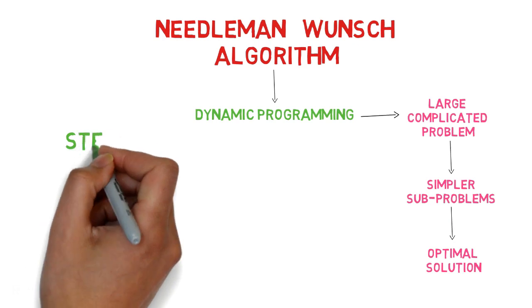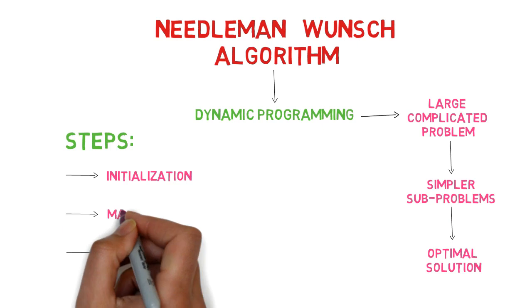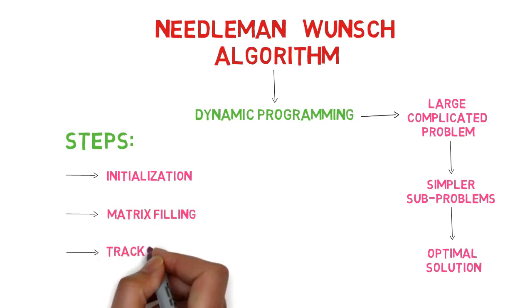The Needleman-Wunsch algorithm includes the following three steps: initialization, matrix filling, and traceback.